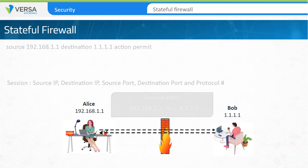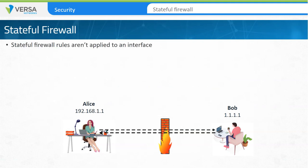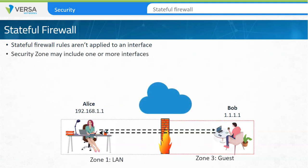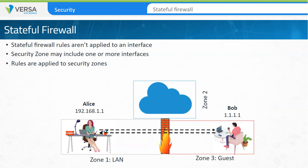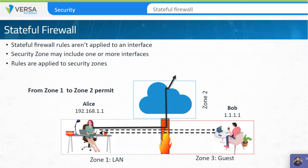Stateful firewall rules aren't applied to an interface. Instead, security zones are defined which may include one or more interfaces. Traffic that must pass from one zone to another must pass through the security policy rules. In the example, two zones are present: the LAN zone, which is internal to the network, and the internet zone, which is inherently less secure. The rule allows Alice to communicate with any resource on the internet but does not allow any device on the internet zone to initiate a connection to Alice's workstation, making her computer more secure.